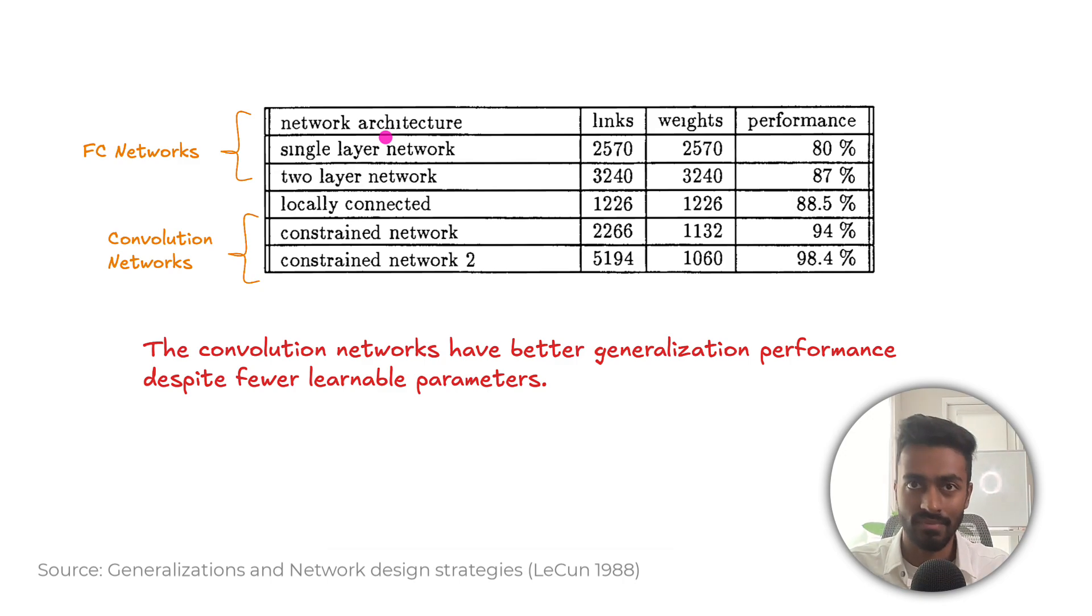And specifically, this is an excerpt from a 1988 paper that conducted a few experiments in this way. So these first two are going to be feed forward neural networks. And we can see that their test or generalization performance is going to be less than the networks here, which consist of convolution layers on the same data set. And it's important to note that this generalization performance is higher, despite having far fewer parameters than the feed forward networks. So convolution networks have better generalization performance, despite fewer learnable parameters.